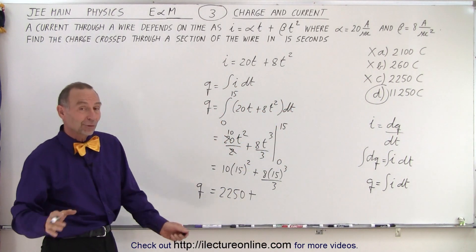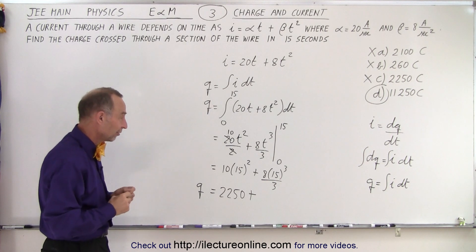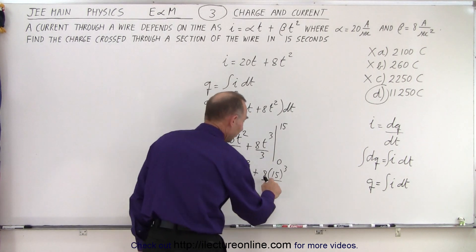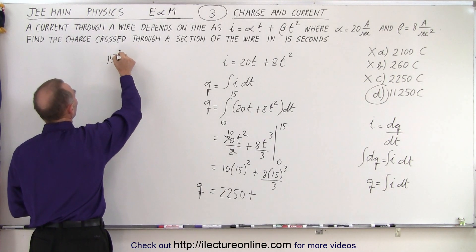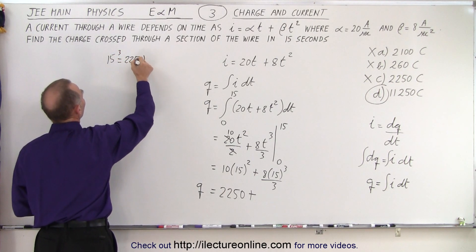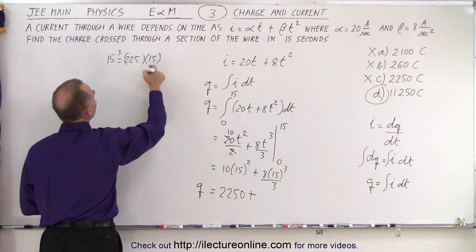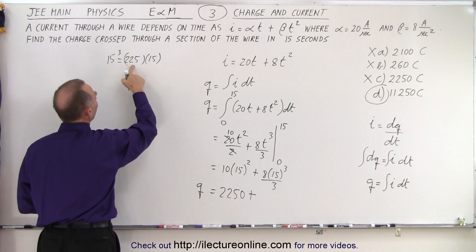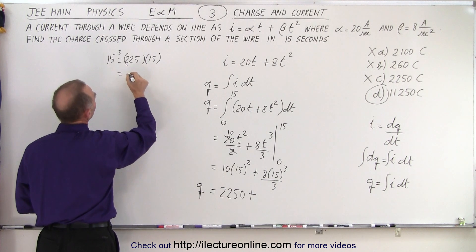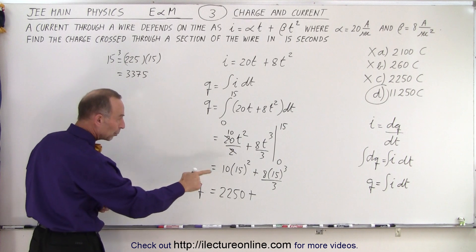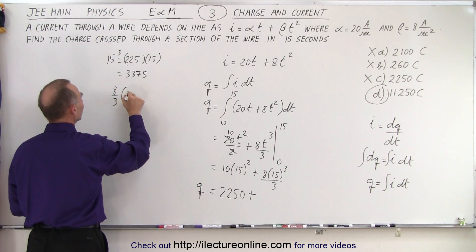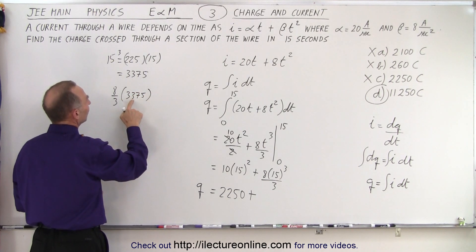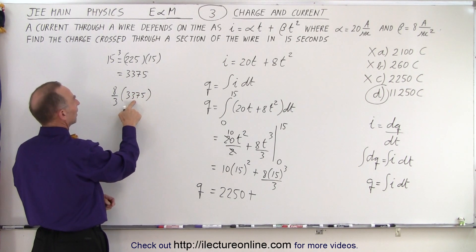Now just to make sure that we have it correct, let's work out the result for d. So now we have 15 cubed times 8 over 3. 15 cubed is equal to 225 times 15, so times 10 and then times 5. Add those together, that gives us 3375.